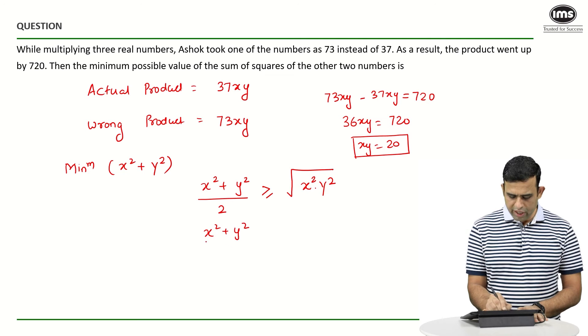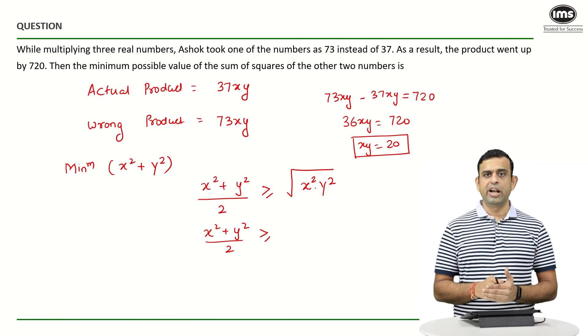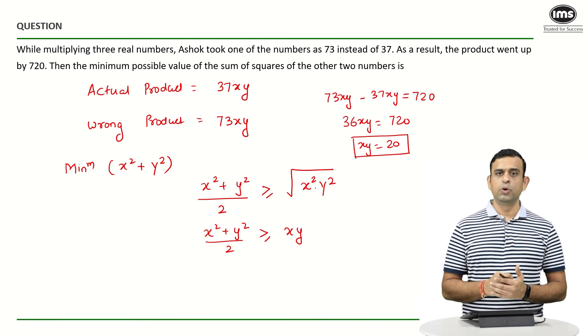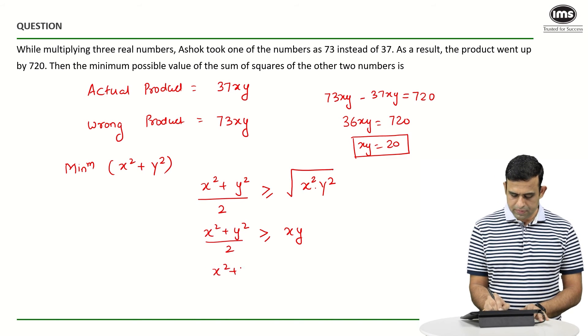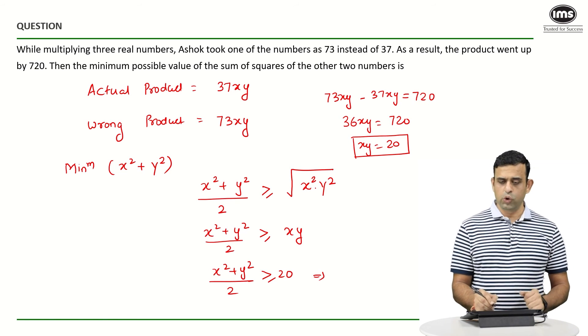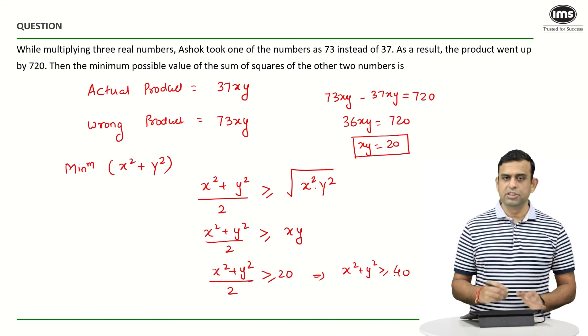So (x² + y²)/2 should be more than equals to the term on the right hand side, which becomes xy, which is known to us as the value 20. So if I cross multiply, we will get x² + y² to be more than equals to 40.